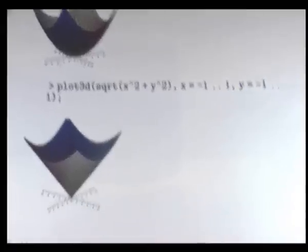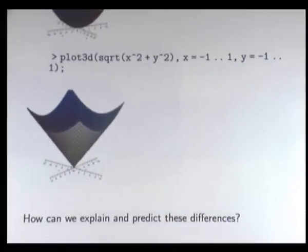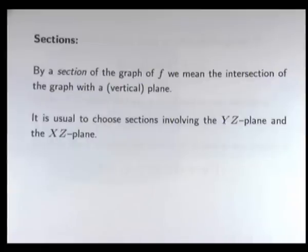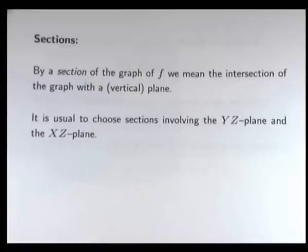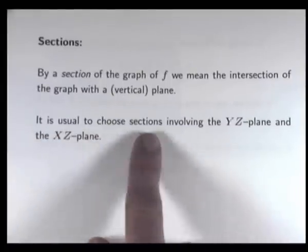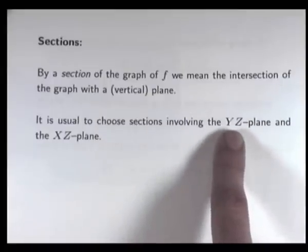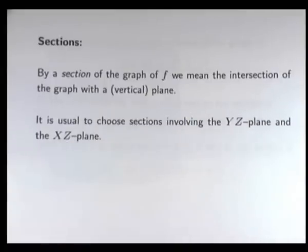So the important question is: how can we explain and predict these differences? Level curves and contour curves are good in one sense, but this shows their real limitation. The answer involves an idea called sections. Sections are basically the intersection of vertical planes with a surface, and it's usual to choose sections involving the YZ plane and the XZ plane.